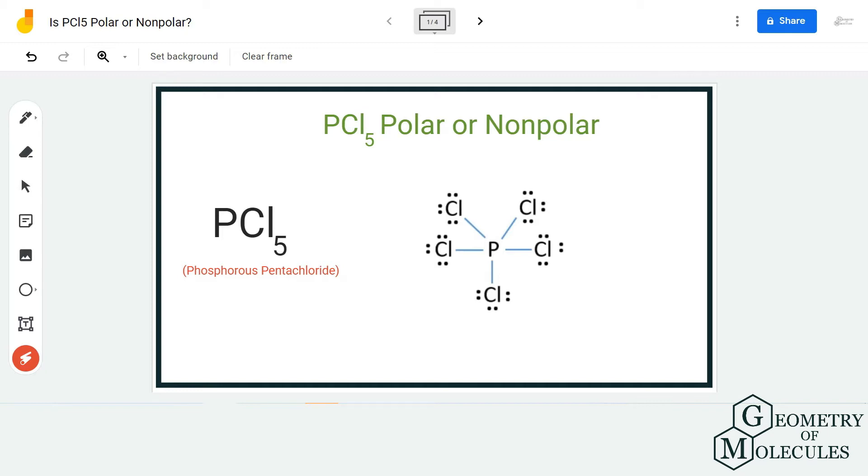To understand if this is polar or non-polar, we first look at its Lewis structure and its shape. This is the Lewis structure of PCl5, in which a phosphorus atom is forming bonds with five chlorine atoms.